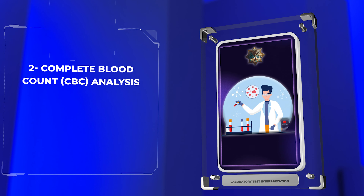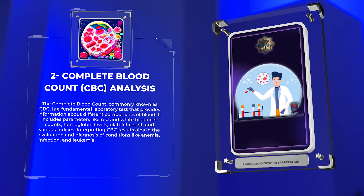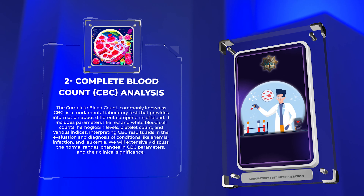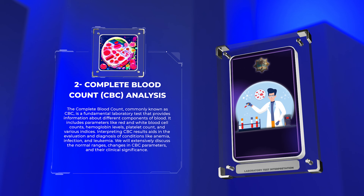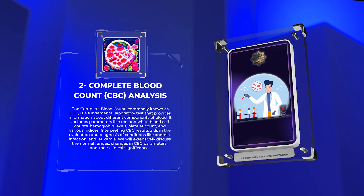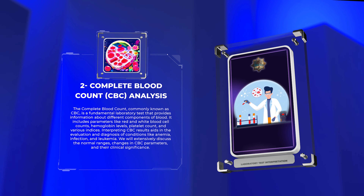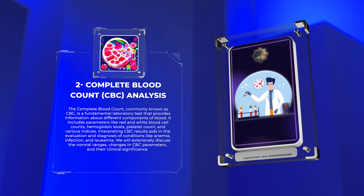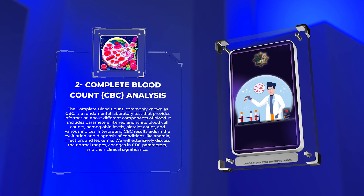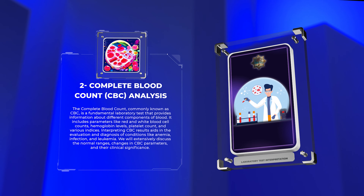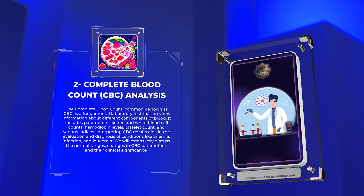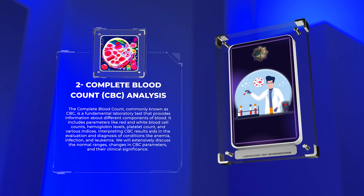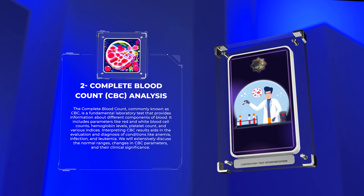The complete blood count, commonly known as CBC, is a fundamental laboratory test that provides information about different components of blood. It includes parameters like red and white blood cell counts, hemoglobin levels, platelet count, and various indices. Interpreting CBC results aids in the evaluation and diagnosis of conditions like anemia, infection, and leukemia. We will extensively discuss the normal ranges, changes in CBC parameters, and their clinical significance.